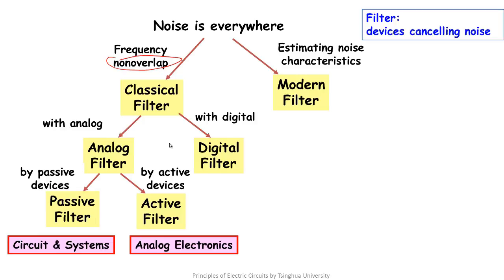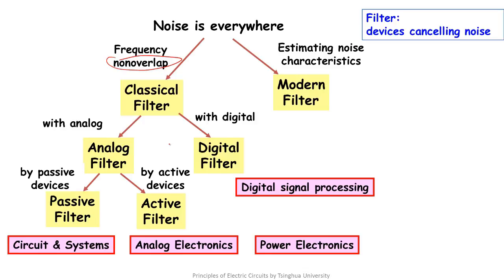Passive filters will be taught in circuits and systems, and active filters will be taught in analog electronics and power electronics. Digital filters will be taught in digital signal processing. Modern filters will be taught in modern signal processing. It can be said that the learning process of electrical engineering field is the learning process of filters.